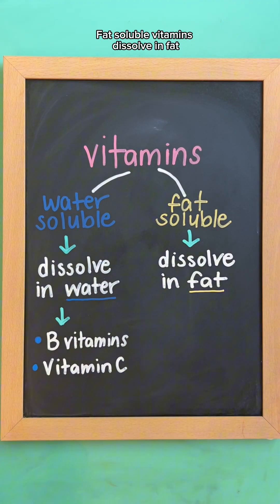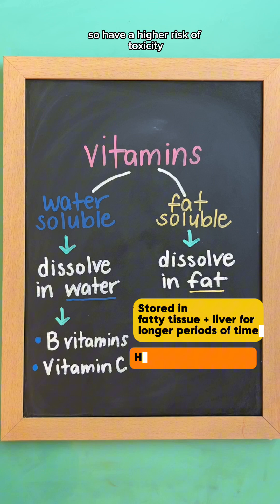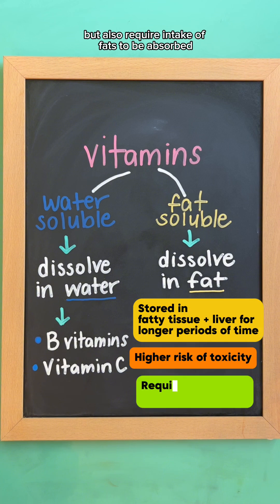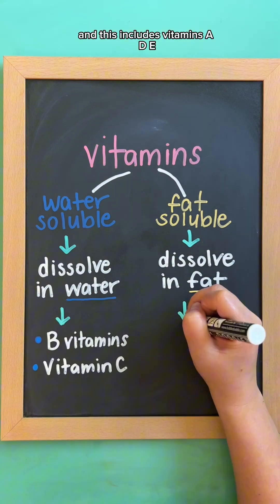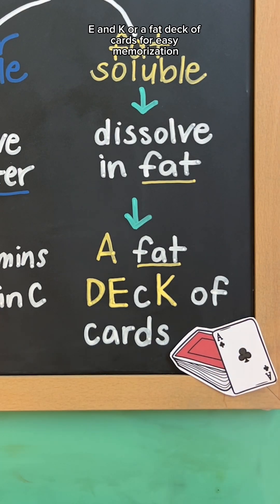Fat-soluble vitamins dissolve in fat. These are stored in fatty tissue and the liver for longer periods of time, so have a higher risk of toxicity, but also require intakes of fats to be absorbed. This includes vitamins A, D, E, and K, or a fat deck of cards for easy memorization.